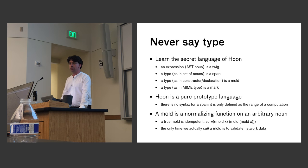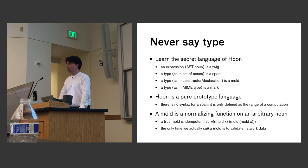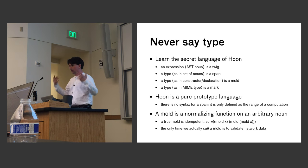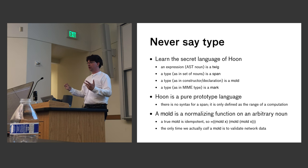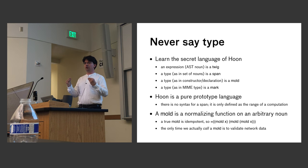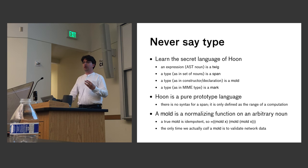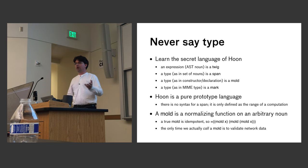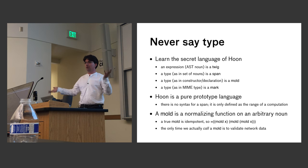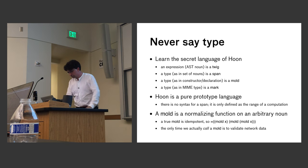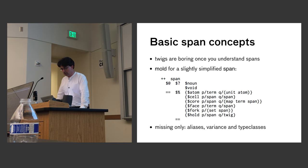When you want to define a type — a set of nouns you're interested in — what you actually define is a normalizing function that takes an arbitrary noun and produces a noun of that type. What's nice about this is that any time you define a type, you automatically have a validator for untrusted network data. We do a fair bit of validating untrusted network data, so that's a win.